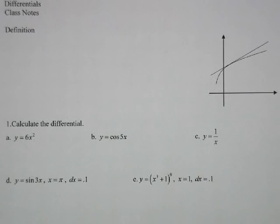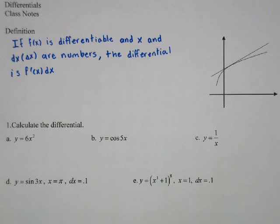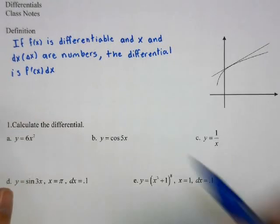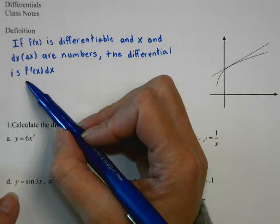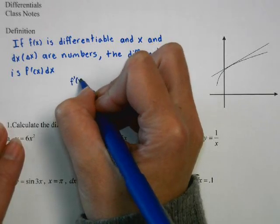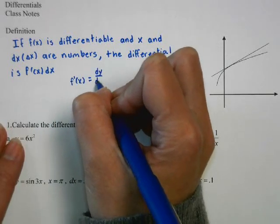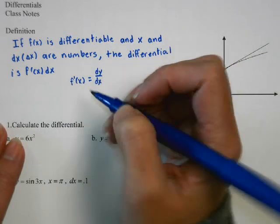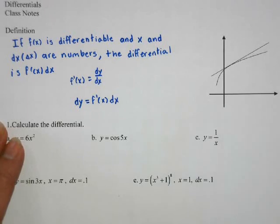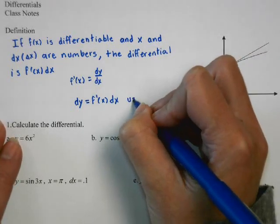Today's lesson is on differentials and linear approximations. If f of x is differentiable and dx and delta x are the same, and dx are numbers, then the differential is dy equals f prime of x dx. This comes from f prime of x equals dy/dx, so multiplying over gives dy equals f prime of x dx. We use this for approximations.